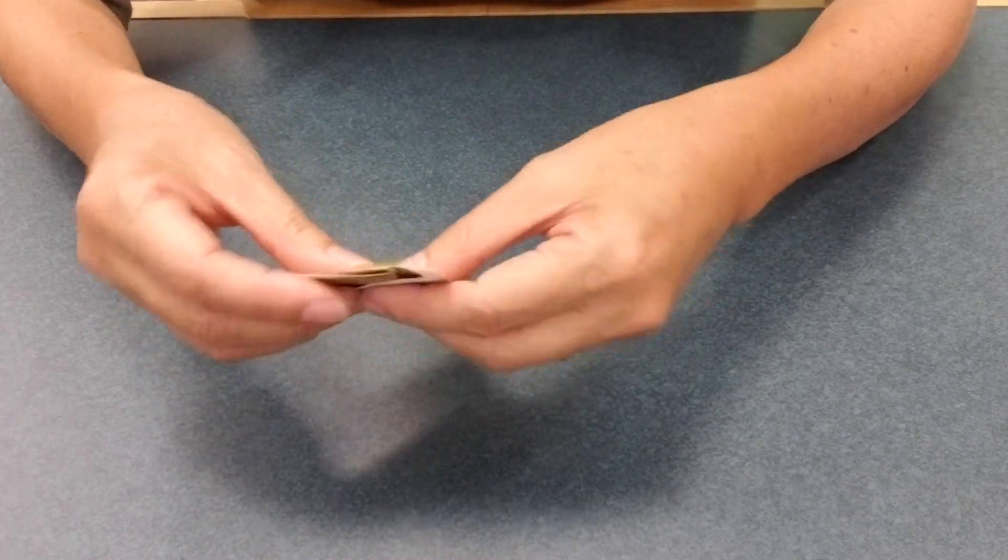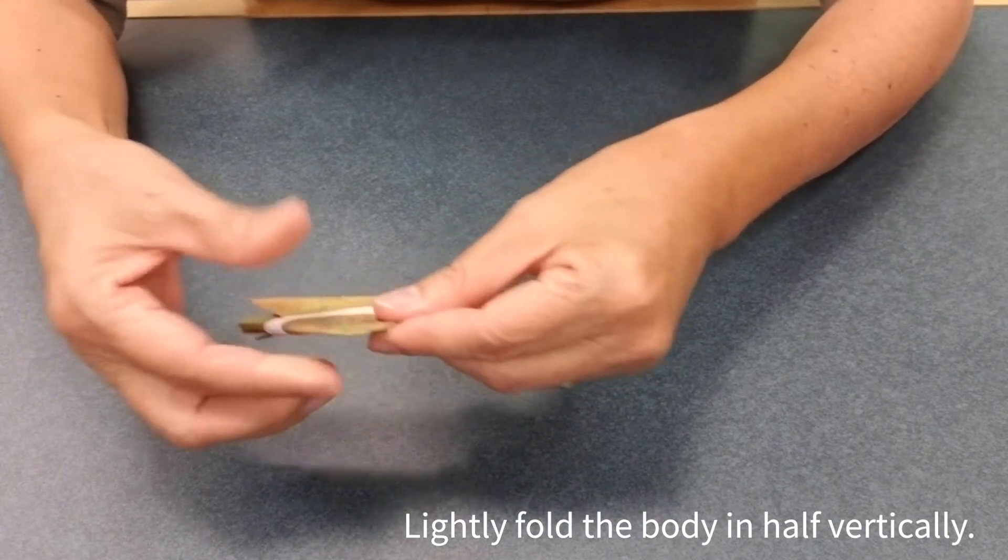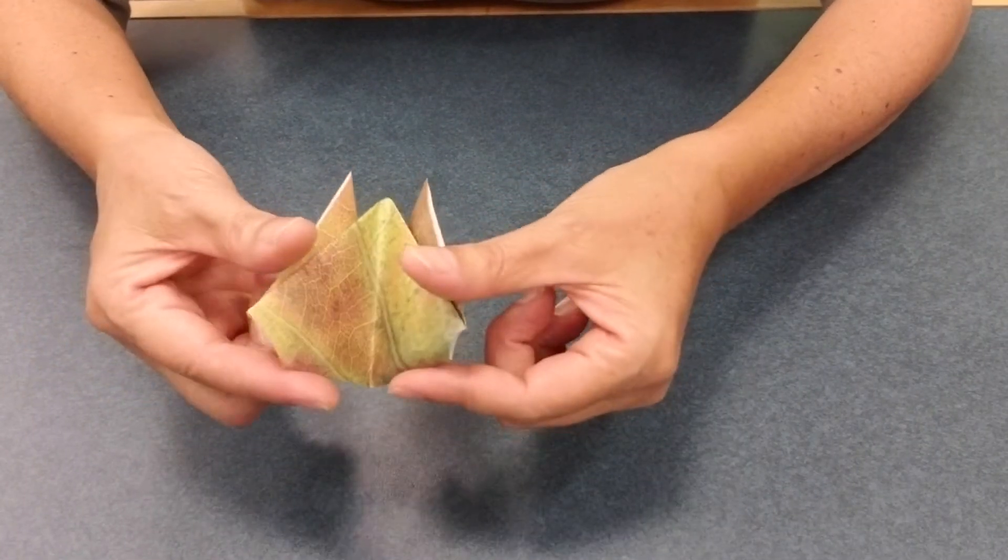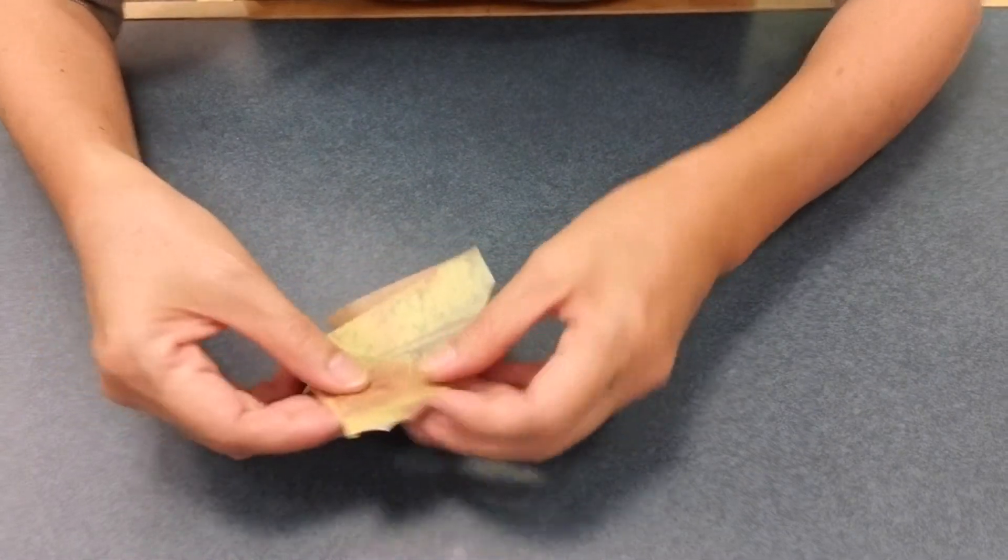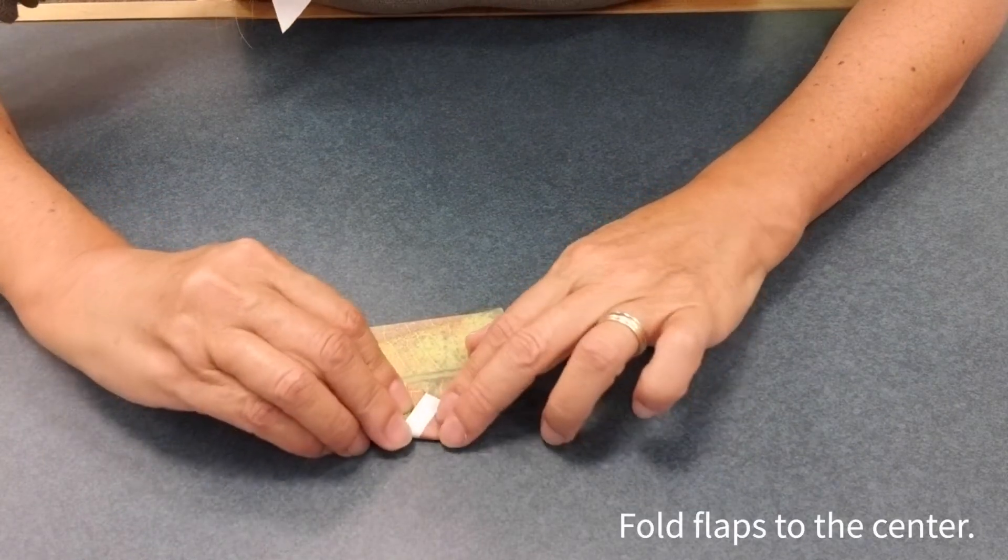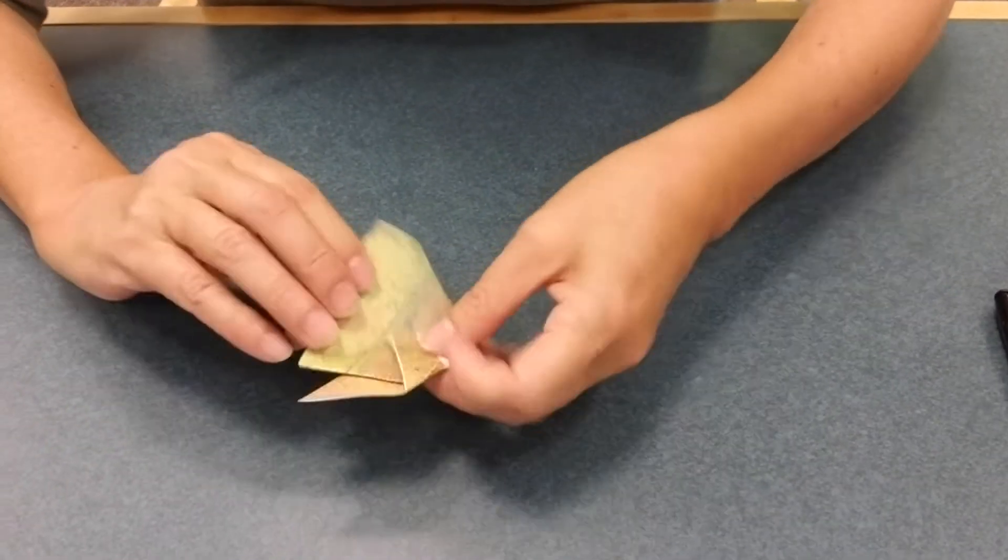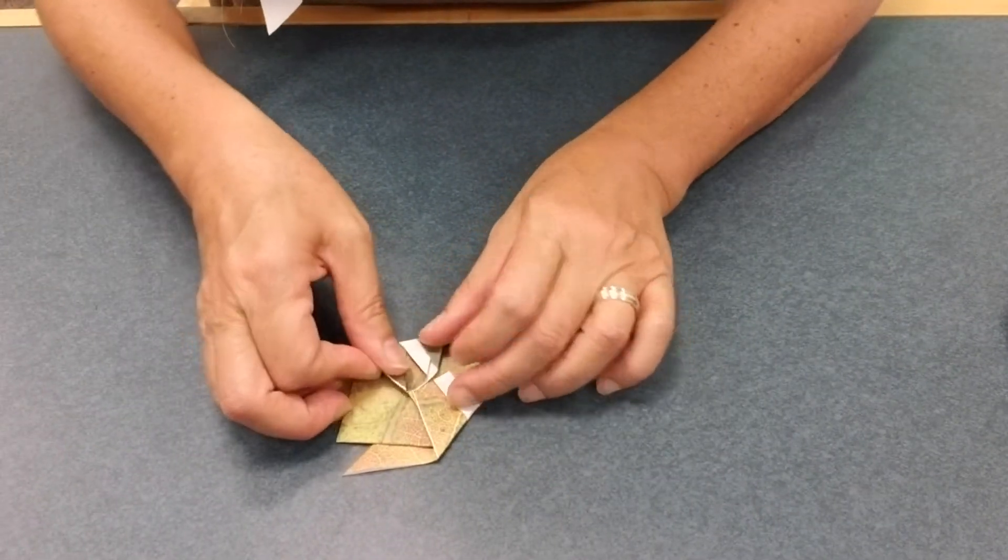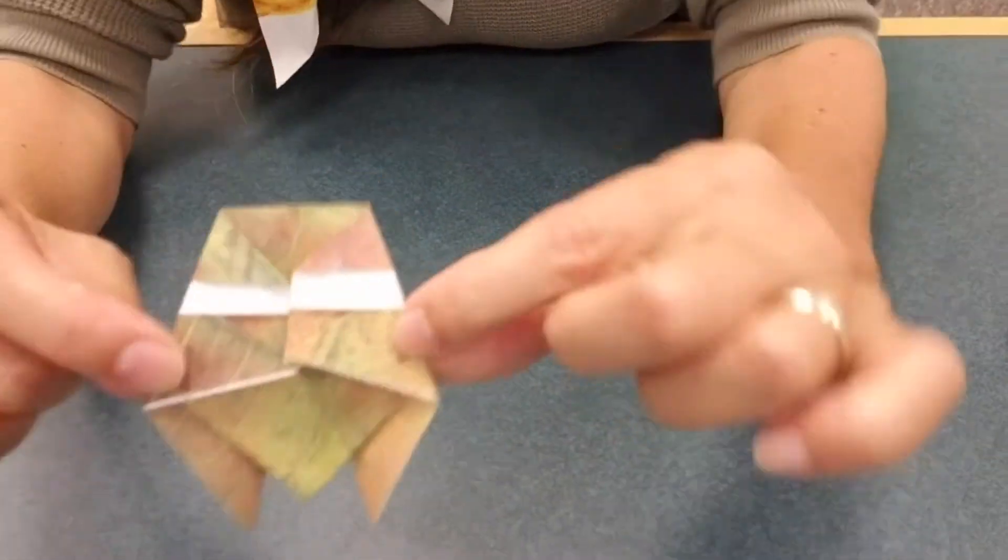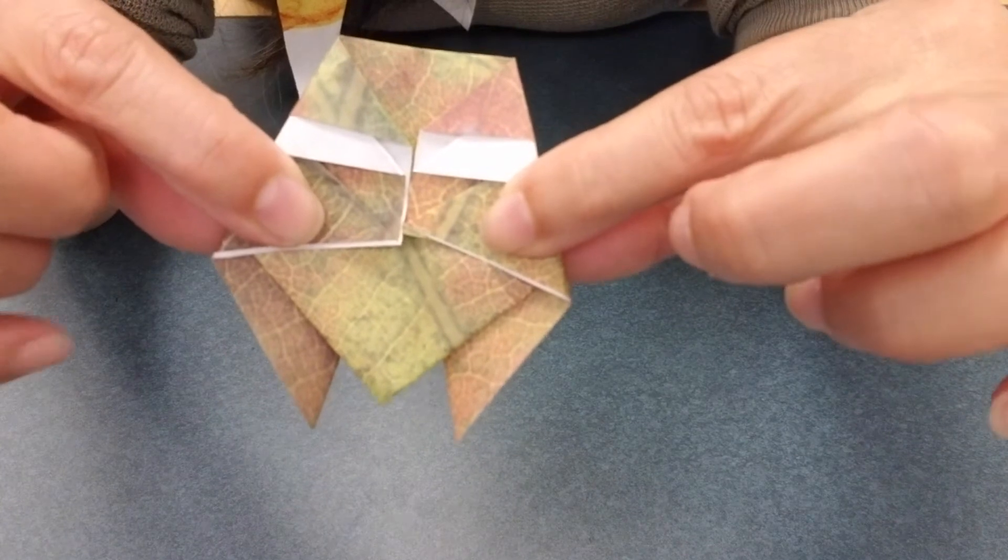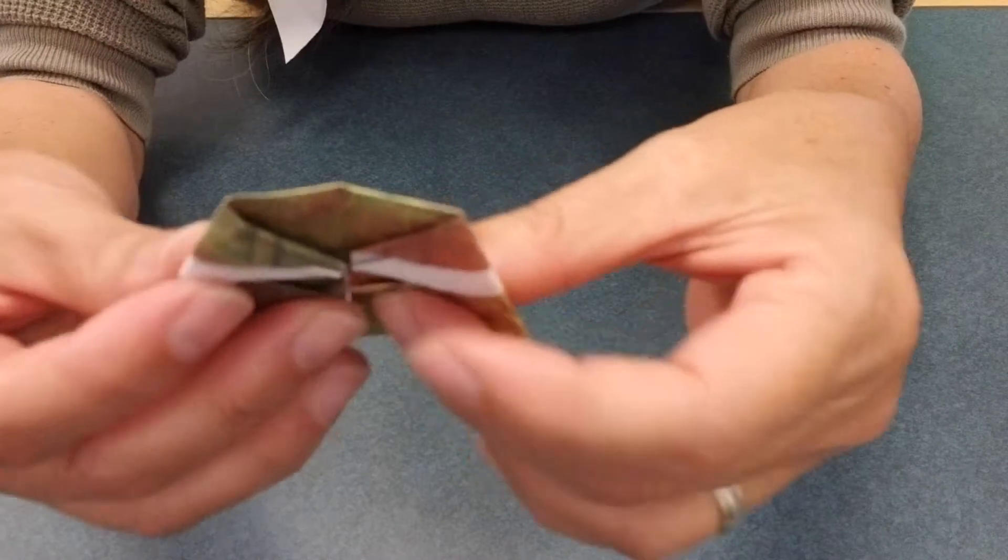Okay, so now fold that in half lightly, just so that you kind of know where the middle of the cicada is. And you're going to turn it over and you're going to fold in these flaps to that center that you just made. And fold both sides in. So this is the underside of your cicada. Alright, so that's done.